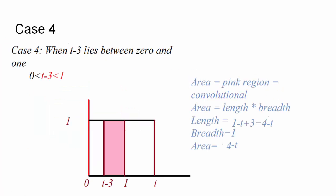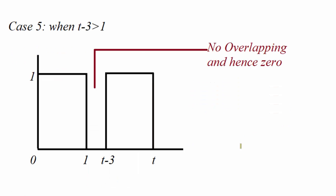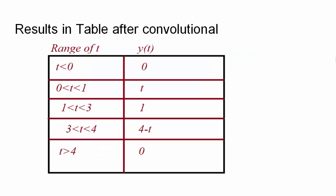Case 4: when t − 3 lies between 0 and 1, meaning t lies between 3 and 4, you get the overlapping pink-colored area. The length is 4 − t, breadth is 1, so area equals 4 − t. Case 5: when t is greater than 4, there is no overlapping and the output is 0. Summary: t < 0 → output = 0; 0 ≤ t ≤ 1 → output = t; 1 ≤ t ≤ 3 → output = 1; 3 ≤ t ≤ 4 → output = 4 − t; t > 4 → output = 0.